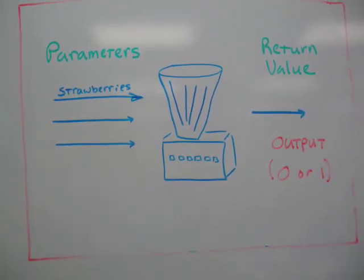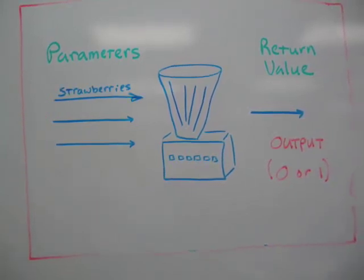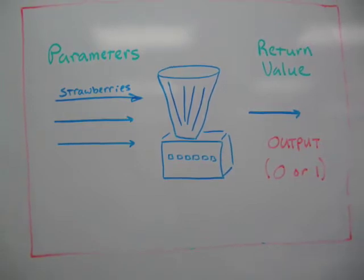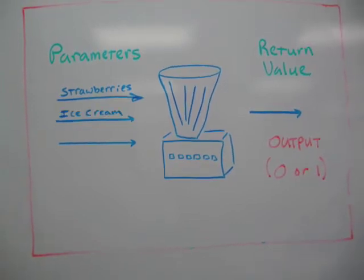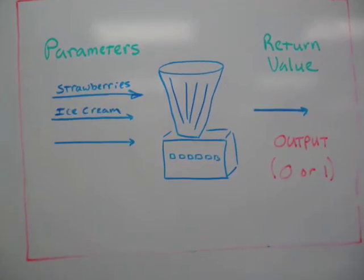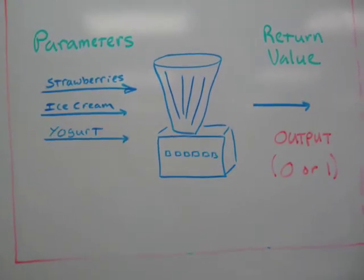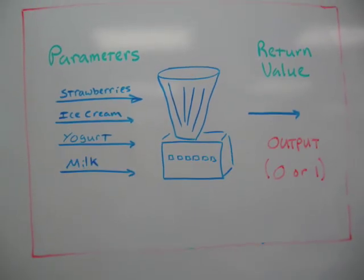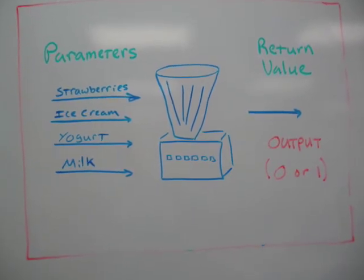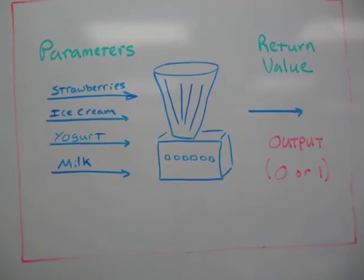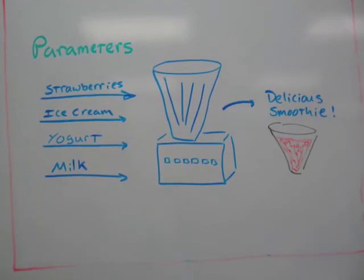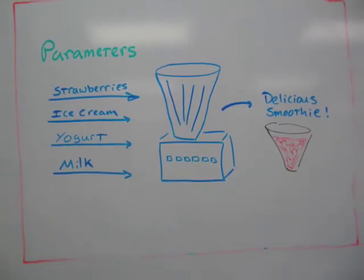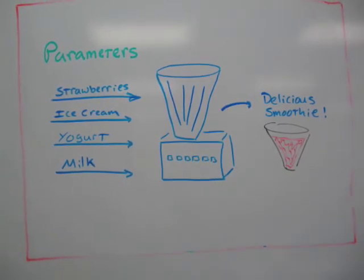Our method takes four parameters. First, strawberries. Then, ice cream. Then, yogurt. Finally, milk. The output of the method will be a delicious strawberry smoothie.